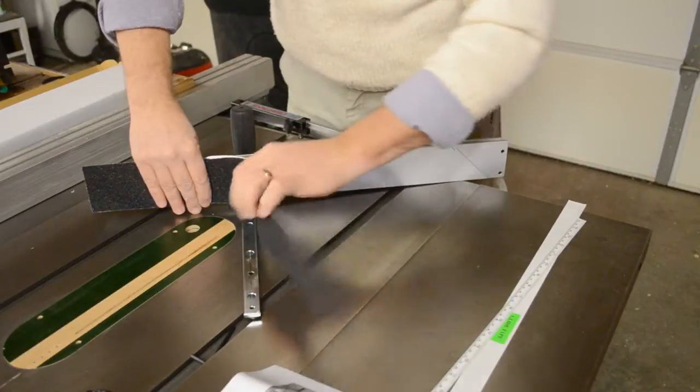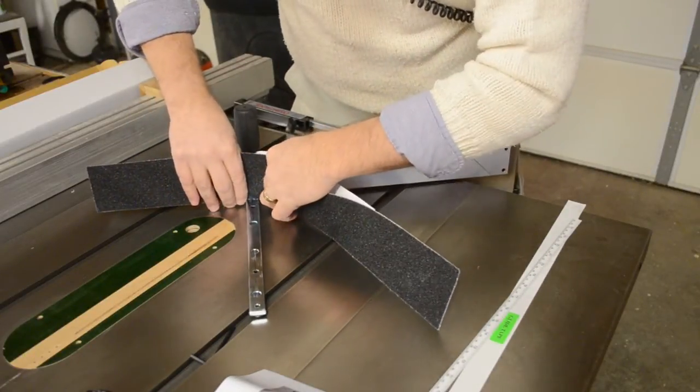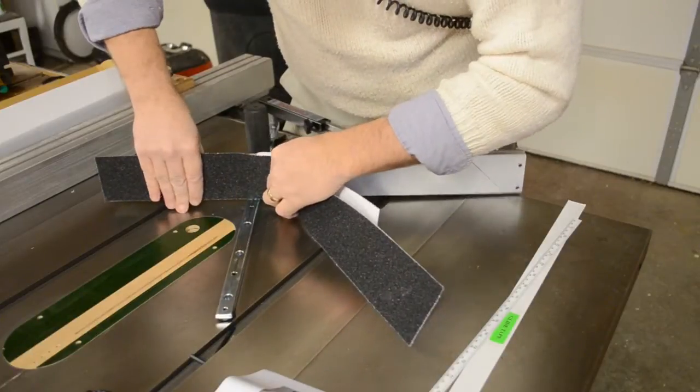Apply pressure over the entire surface with the palm of your hand or with a hard rubber roller. Removing the fence makes this process a lot easier.